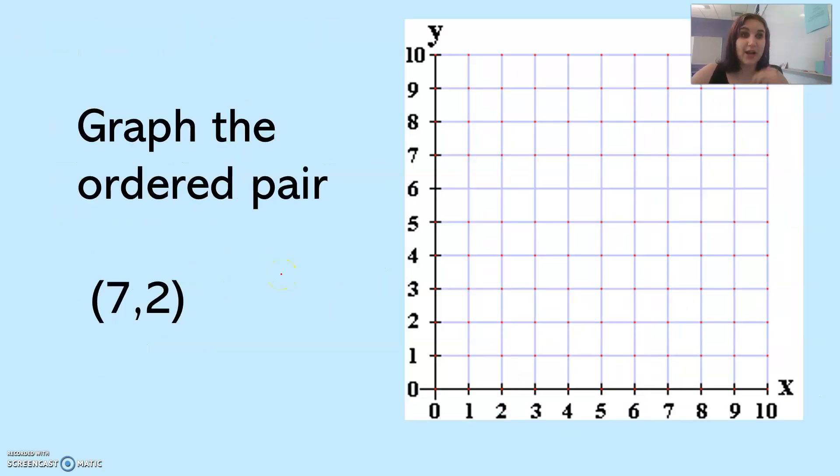See if you can try this one. In your head, pause the video, and point on your screen where seven comma two is. Okay, so I'm going to go over seven, my x value is seven. Over seven, and then up two. That is where you draw and label your point.